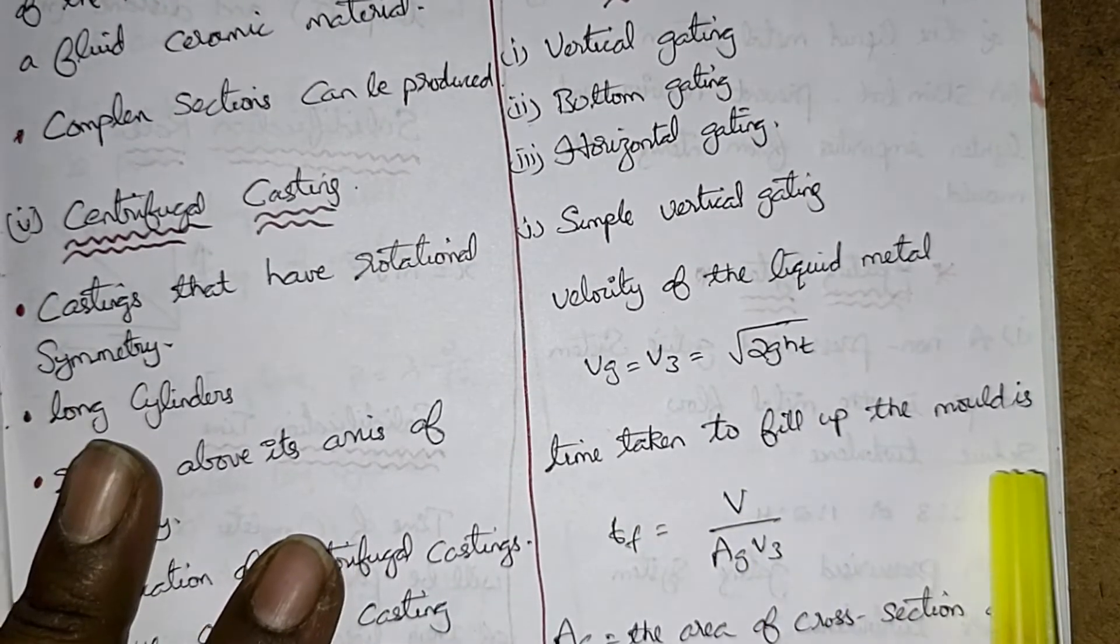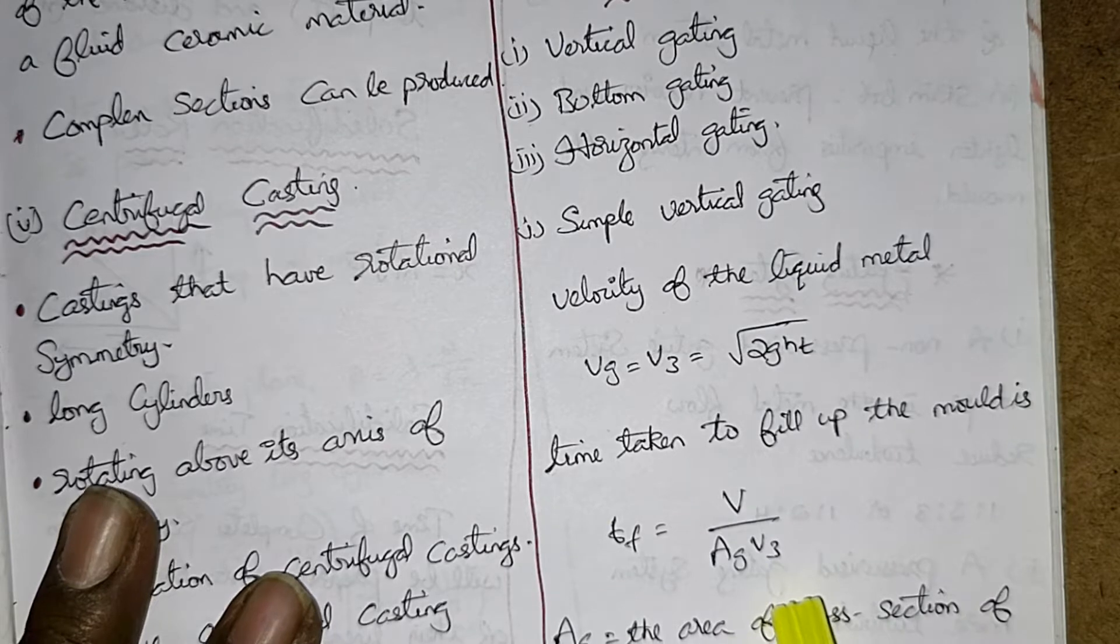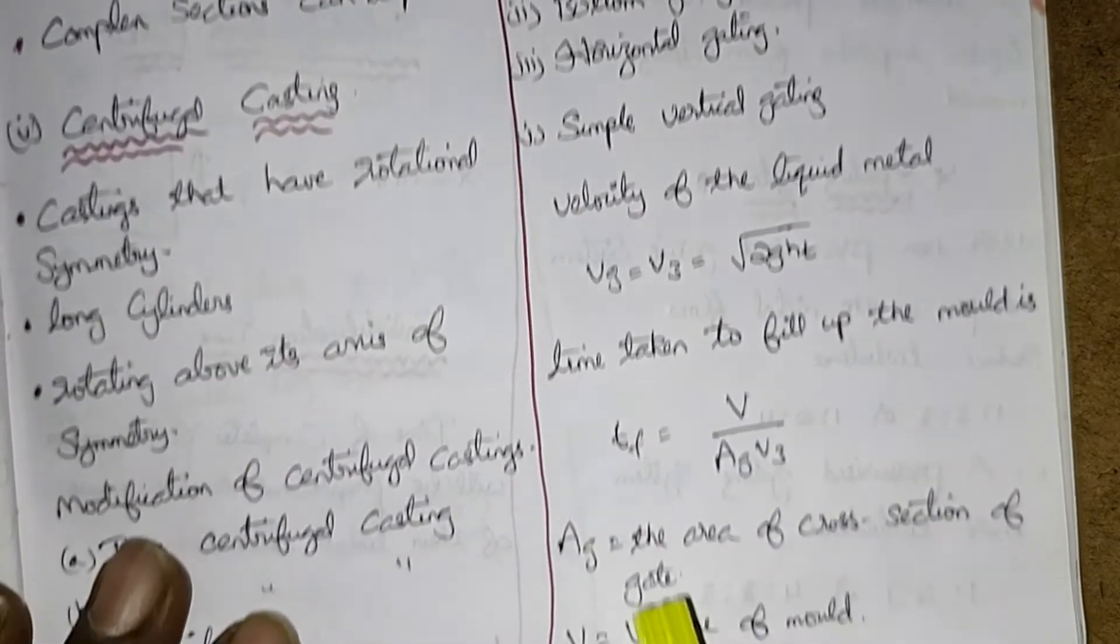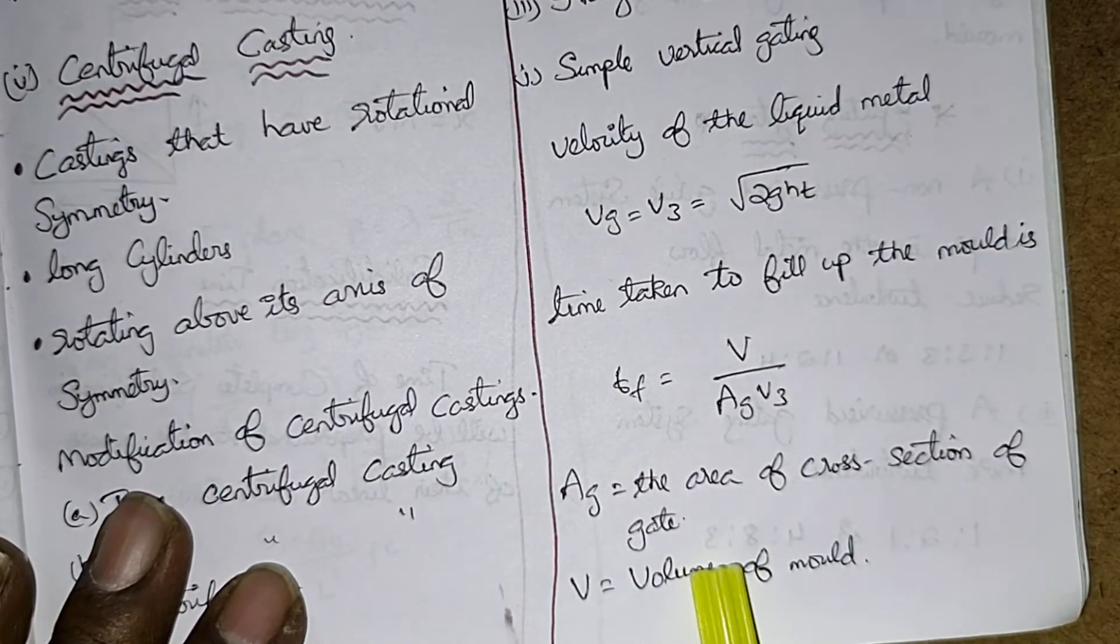Time taken to fill up the mold is Tf equal to V by Ag*V3. And Ag is the area of cross section of the gate, V is volume of mold.